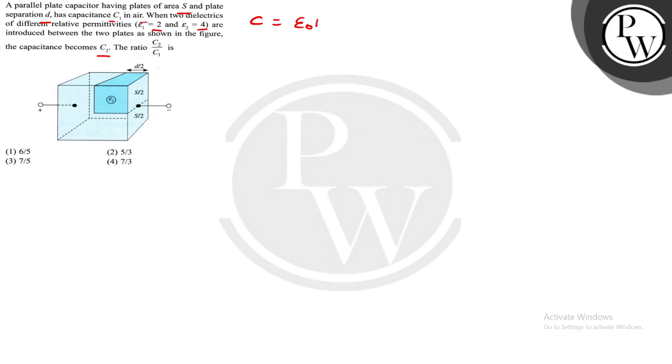C1 in air is equal to ε₀A/D, which is in air, so ε₀ times area S divided by separation D. This is our C1, right? Now what do I do? I will create this in different parts. This one is CA, this one is CB, this one is CD.